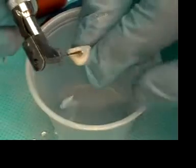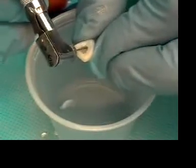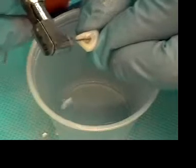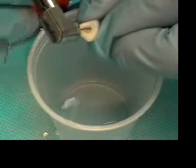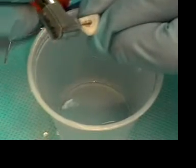Okay, I'm next going to use the number four gates glidden. Again, I'm just using the four gates in the coronal portion of the preparation.